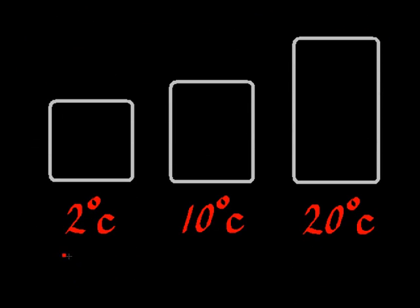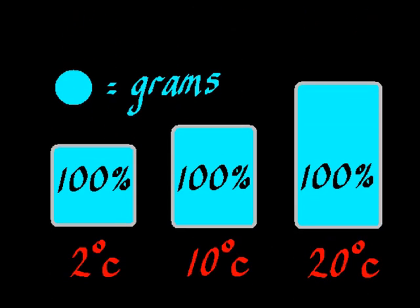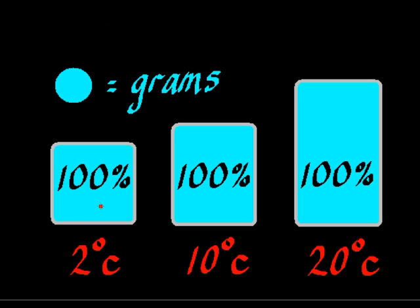This diagram denotes a parcel of air at three different temperatures: 2 degrees centigrade, 10 degrees centigrade, and 20 degrees centigrade. The parcel of air is the same size in each case. However, the different size boxes denote the maximum amount of water that this parcel of air can hold at these three different temperatures. Here is a diagram showing this parcel of air at three different temperatures containing the maximum amount of water that that parcel can hold at each temperature.